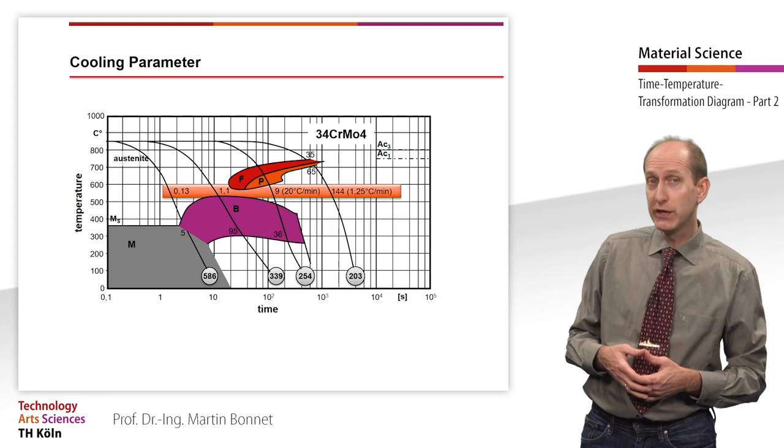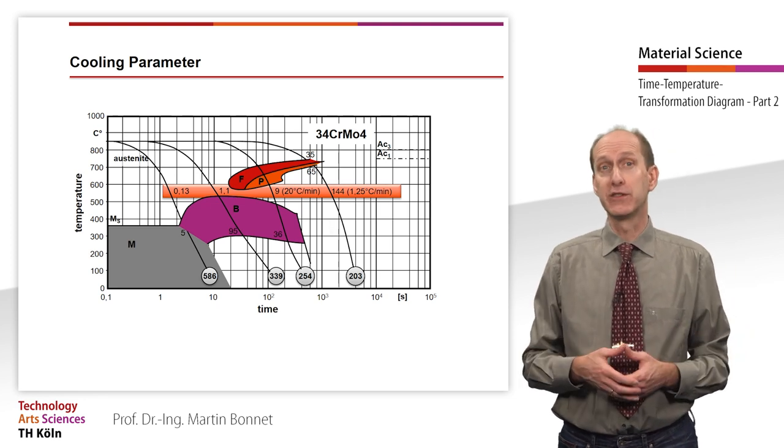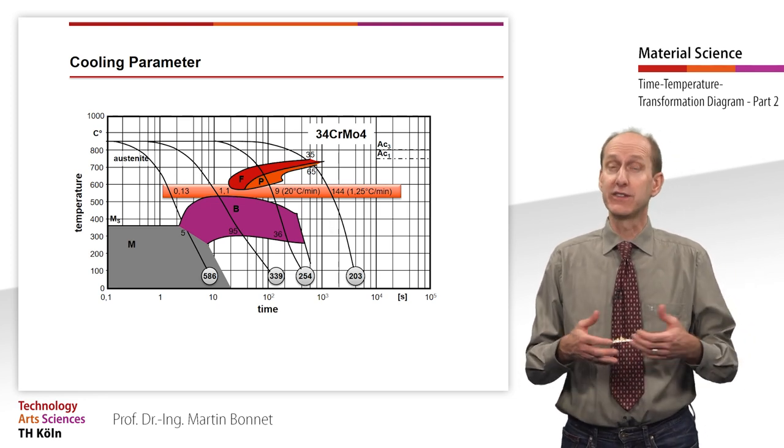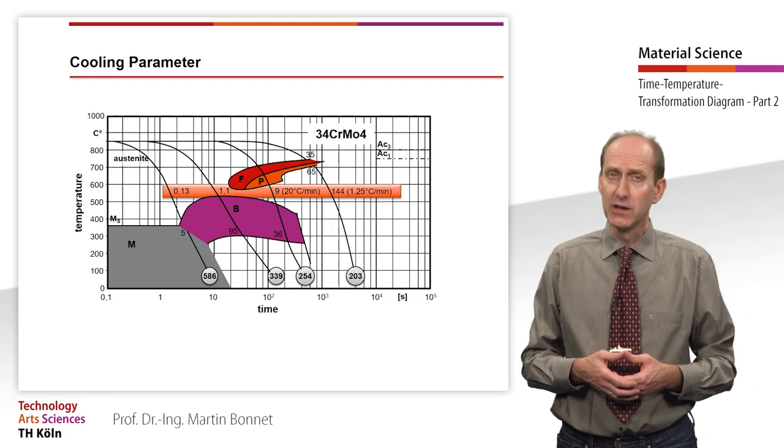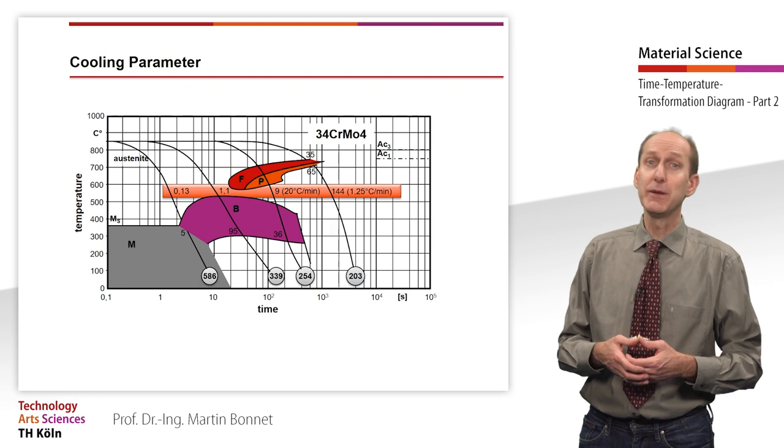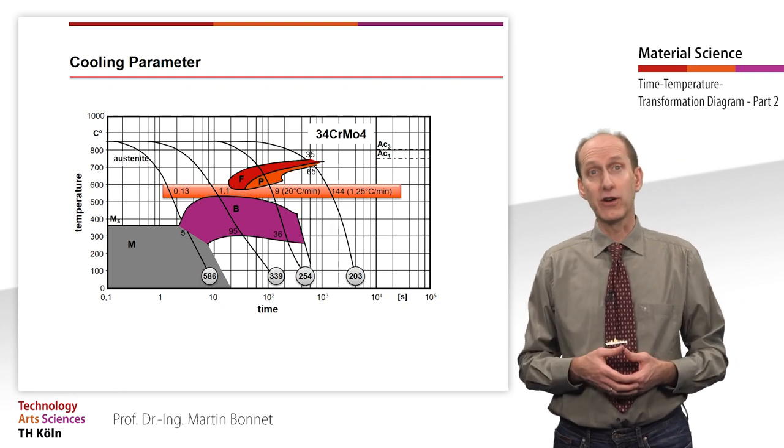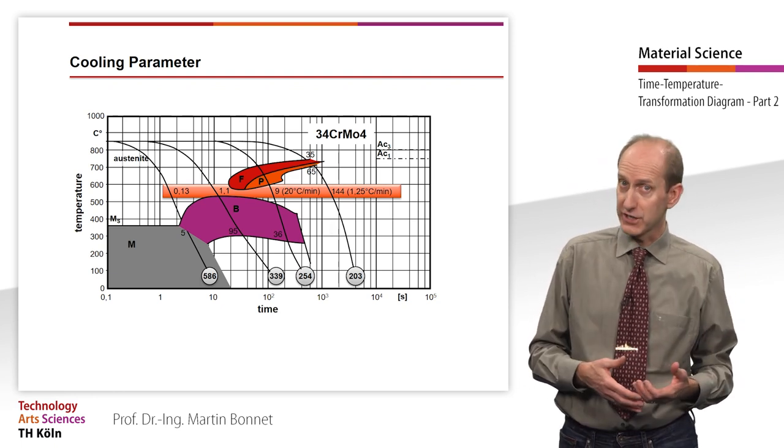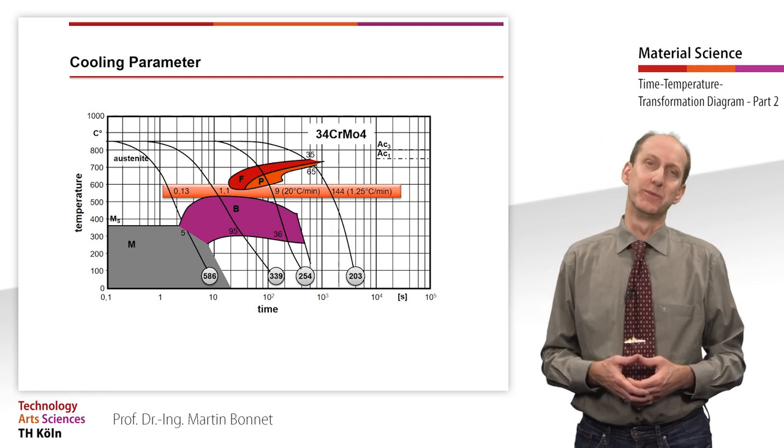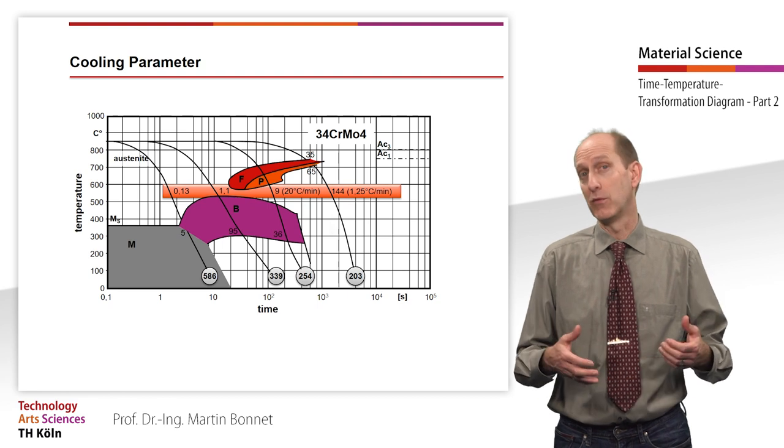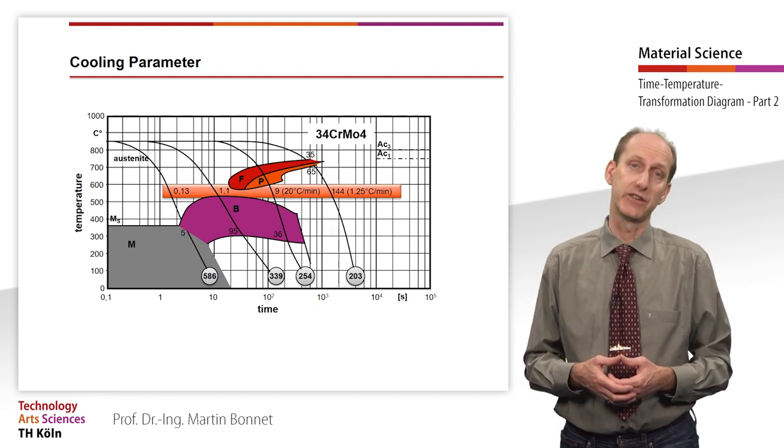With the aid of this cooling parameter, or by drawing the measured cooling curve in the time-temperature transformation diagram of the respective steel, the cooling process can be followed and it can be read whether the desired transformation result can be achieved. For this reason, the cooling parameters are also shown in some of the time-temperature transformation diagrams.